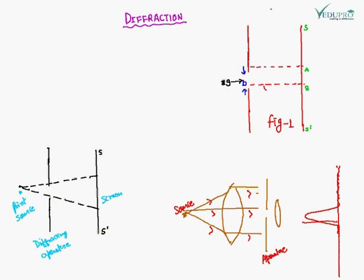we expect the region AB of the screen to be illuminated — as shown by the dotted line A — since light travels in a straight line. The remaining portion is known as the geometrical shadow, expected to be absolutely dark.